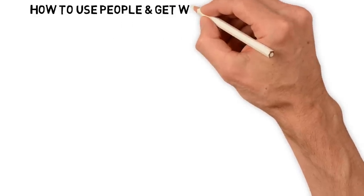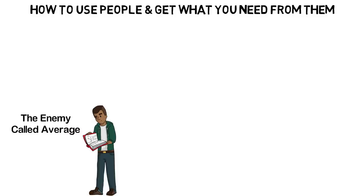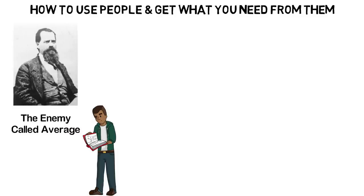How to use people and get what you need from them. When I was a little guy of about 17, I read a book called The Enemy Called Average by John L. Mason.